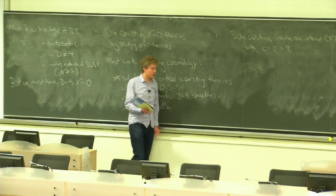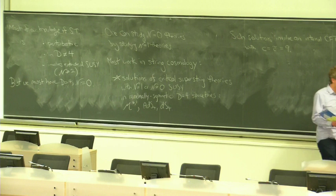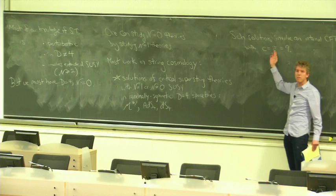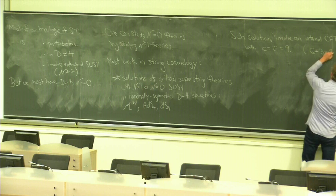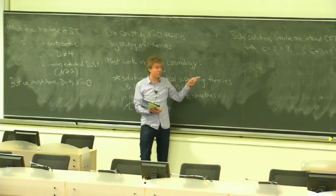So such solutions involve an internal conformal field theory with left-moving and right-moving central charge equal to 9. The critical superstring theory, as you well know, is naturally formulated in 10 dimensions, and to get down to 4 dimensions, you need 6 dimensions worth of central charge. In central charge, that's 9 units because you have the 6 bosonic directions, each with central charge 1, and their fermionic partners, each with charge a half.